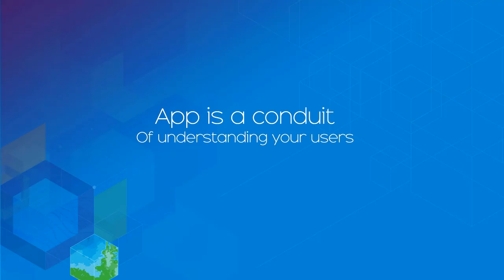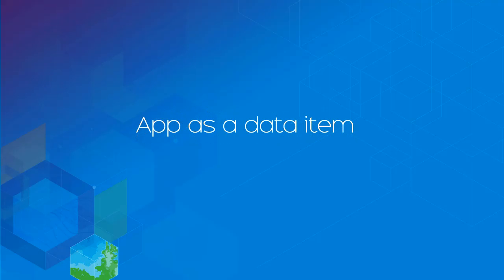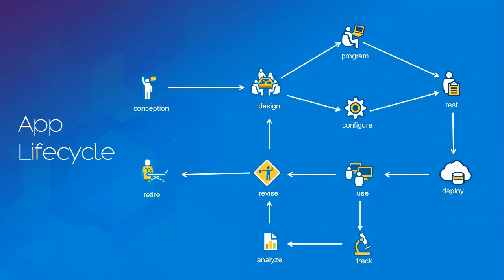An app is something you use to understand your users, your customers — not just something to get your job done. Also, apps become a data item. It's not just an application; it has its own lifecycle. You need to manage the app just like data. You have ideas, you design, you program or configure it, you deploy, track, and analyze it. You feed that back into your developers and configurators, and you continue doing that. The lifecycle should be very short because apps are disposable.